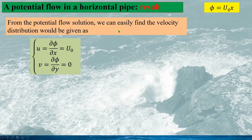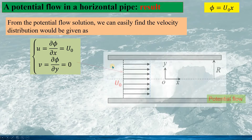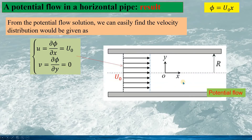From the potential function, we can easily find that the velocity distribution gives U as constant. This means the potential flow in the horizontal pipe would be uniform, so the flow distribution is all U0 throughout the pipe.